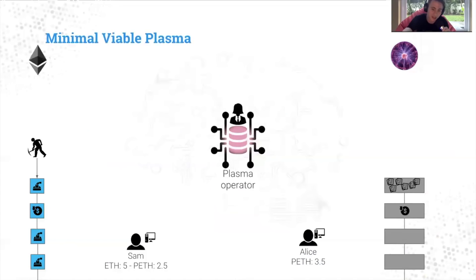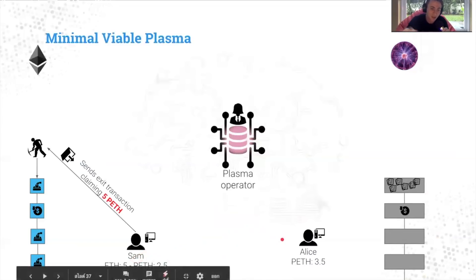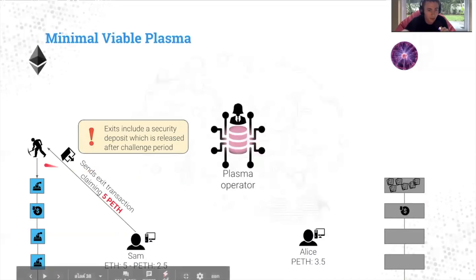So Sam will attempt to withdraw all her PETH. So essentially Sam, you'll notice only has two point five. However, Sam is going to send an exit transaction claiming that Sam has five. And so Sam will reference an old transaction as her deposit. And this deposit will say legitimately five PETH. But we know that Sam has since then transferred a bunch of ETH to Alice.